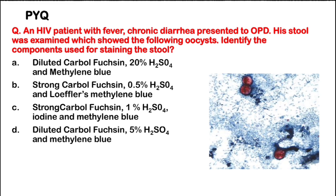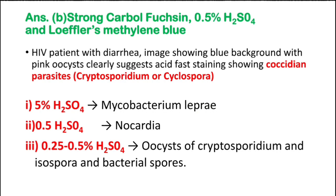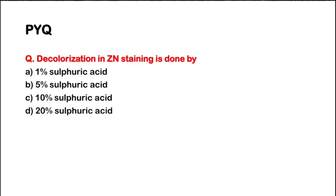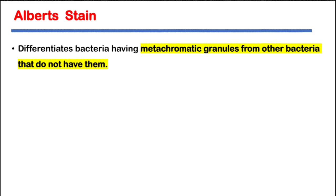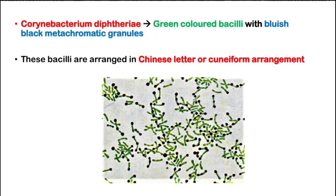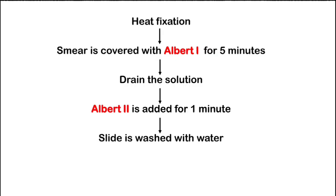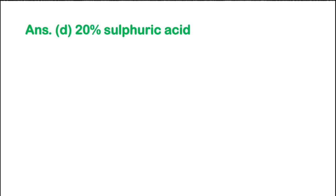An MCQ example: an HIV patient with chronic diarrhea presents to OPD with stool examination showing oocysts — the decolorizer used is 0.25 to 0.5%. For ZN staining decolorization, the most commonly used is 20% H2SO4. Another stain is Albert stain, used for staining diphtheria bacilli — you will see dark blue metachromatic granules at one end with the inner green bacilli, arranged in a cuneiform (V and L shape) arrangement.